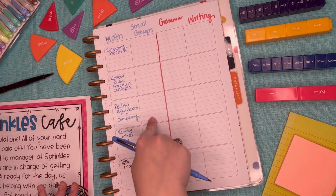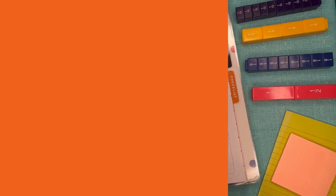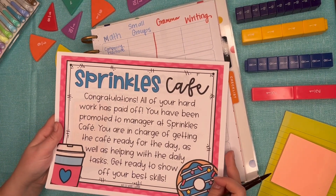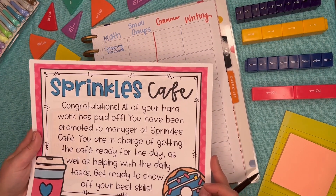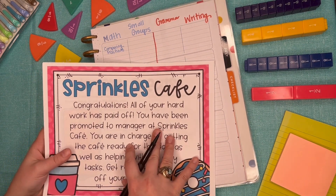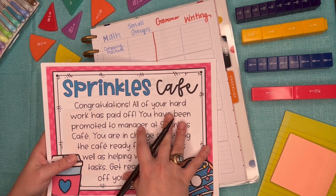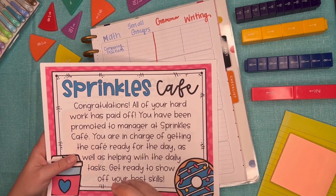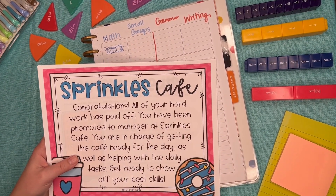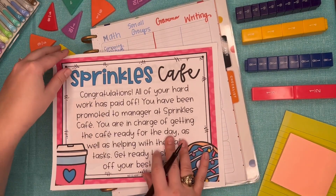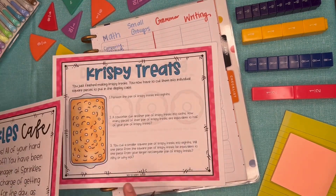Now let's get into the fun — let's look at what I'm going to be doing in small groups this week to help my students get ready. And I'm sorry, but it's going to make you hungry. To review before our unit test on Friday, I'm going to be using this super fun project-based learning activity with my students. It's called Sprinkles Cafe, and students are going to be running a coffee and bakery cafe using all their fraction knowledge.